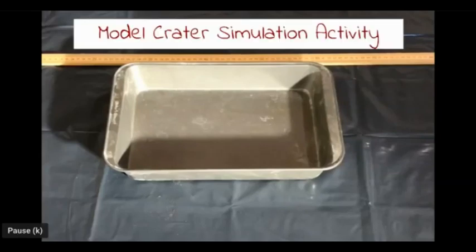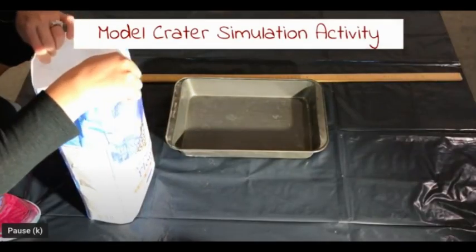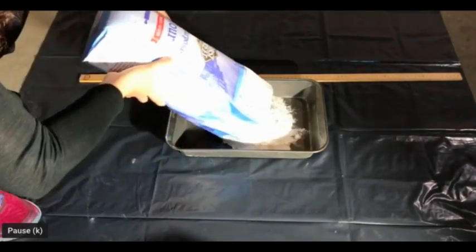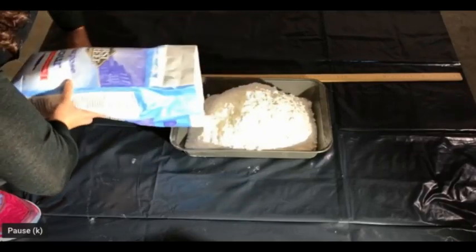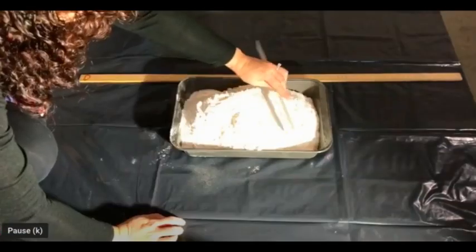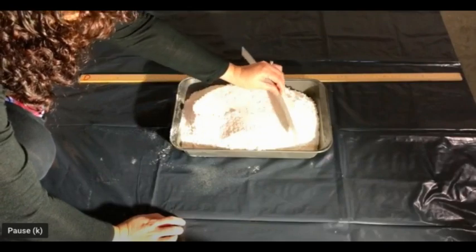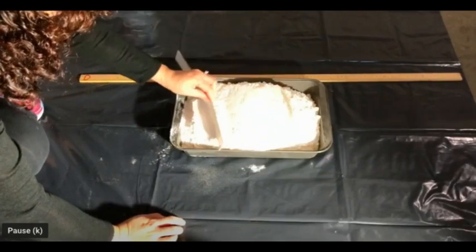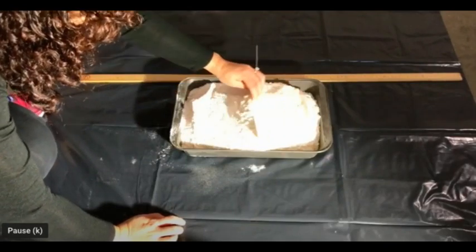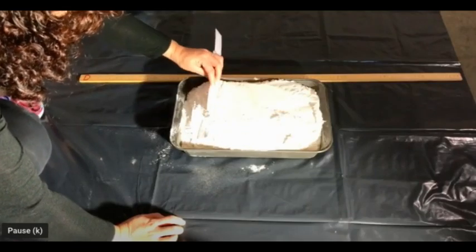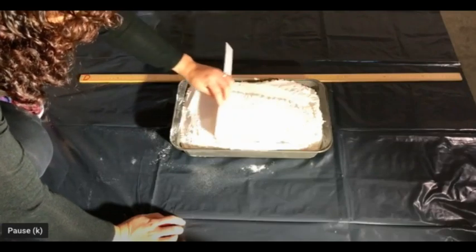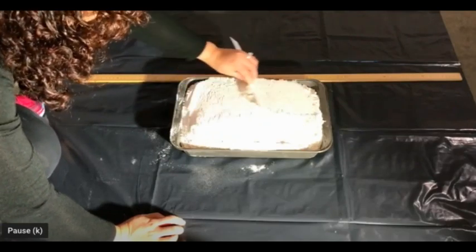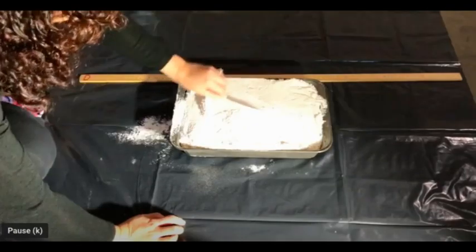So to start with we have the dishpan. You want to get the deepest that you have and then flour right there. I will just fill it up to the deepest. Deeper the flour, that will be better, and then what you want to do is you want to make it flat, simulating a flat surface or the surface of the earth. It doesn't have to be completely flat. As long as you have an even surface so that when you drop the asteroid you can see the effects on the features of the impact crater.